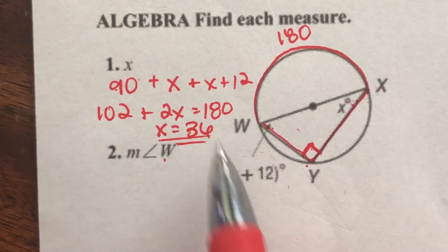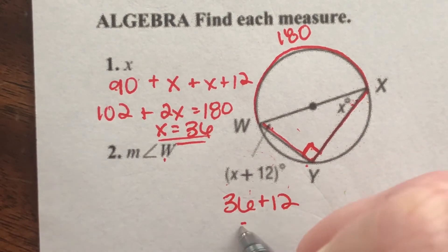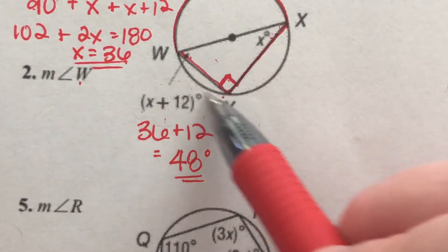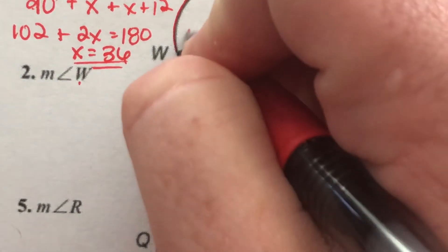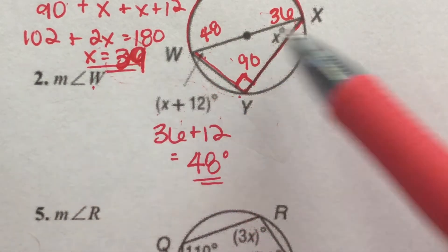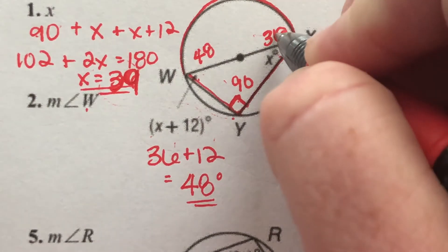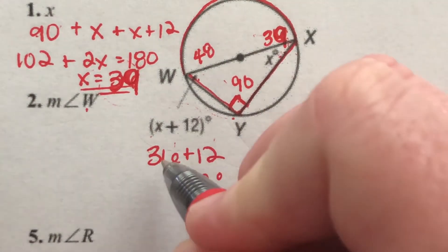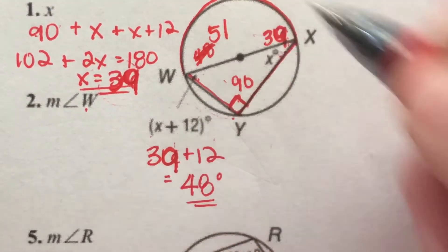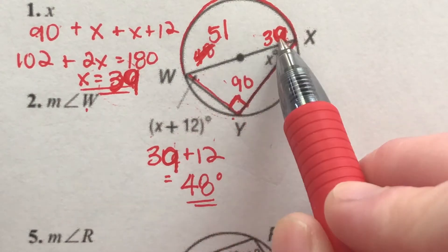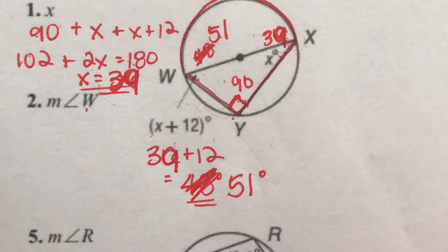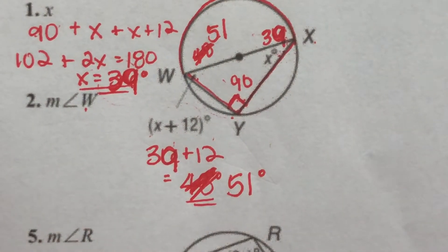For the measure of angle W, once I know x equals 39, I plug it in: 39 plus 12 equals 51. Let me verify: angle X is 39, angle W is 51, and the right angle is 90. 39 plus 51 plus 90 equals 180. They all add up to 180. So angle W is 51 degrees and angle X is 39 degrees.